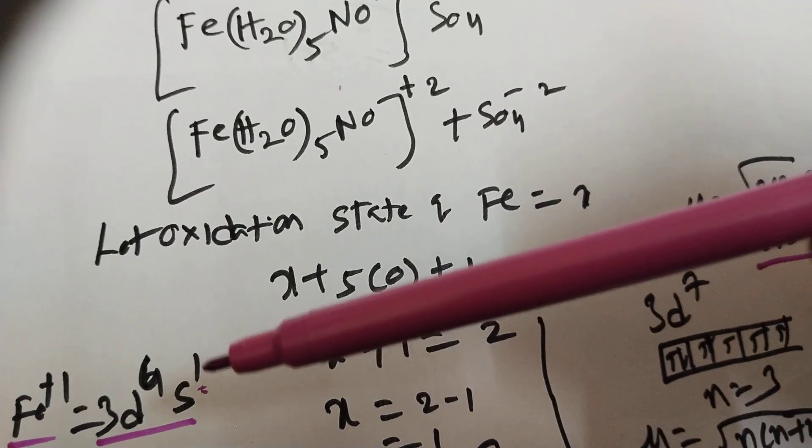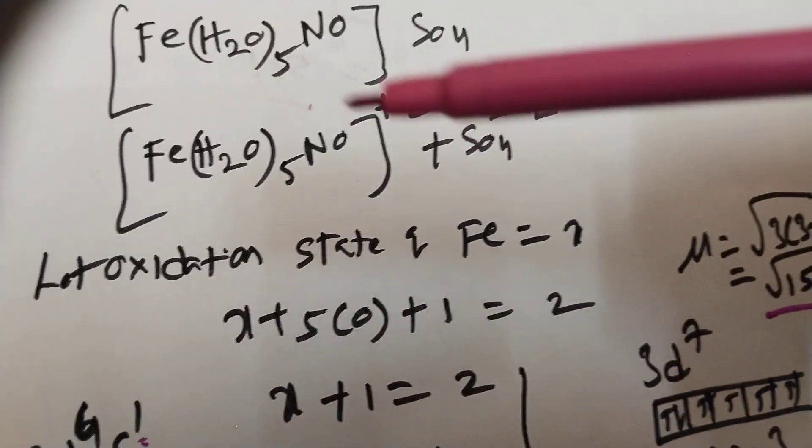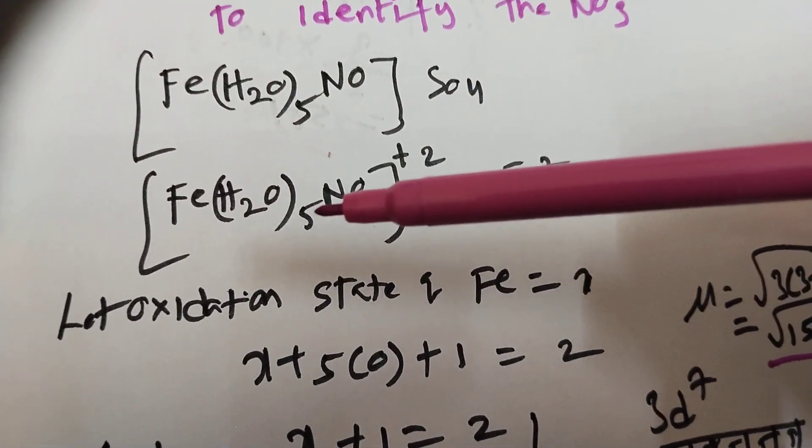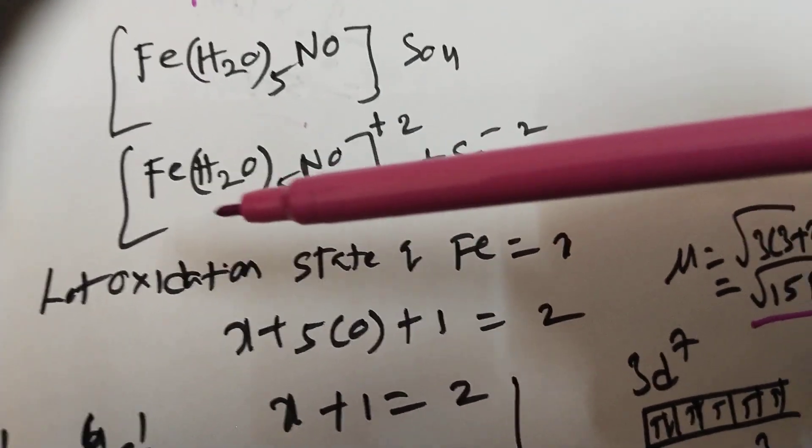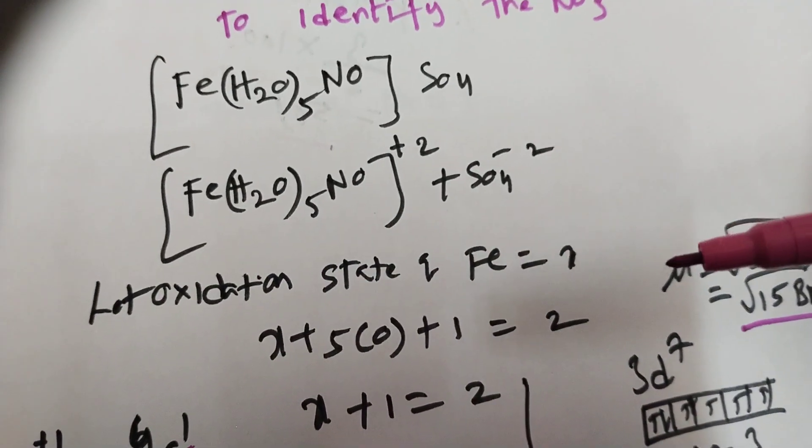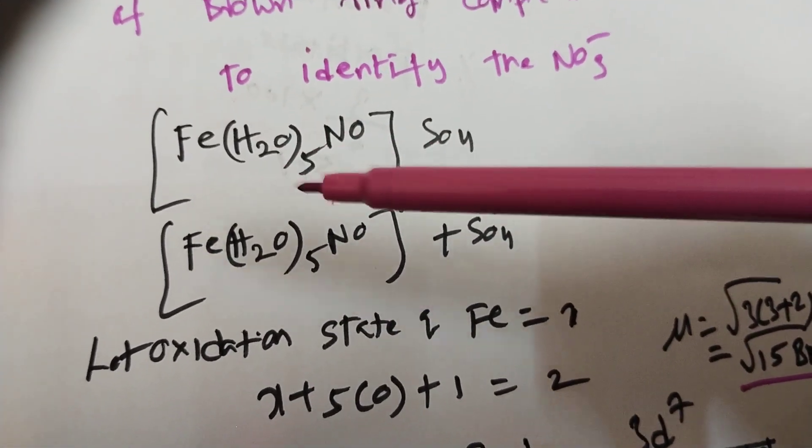Now 4s electron enters into 3d, so 4s vacant, 4p vacant, 4d also vacant. Here 4s, 4p, 4d. Now how many ligands are there? 6 ligands. Each ligand will contribute 1 lone pair. So SP3D2 hybridization. Please note it, if they ask what is the hybridization present in brown ring complex.